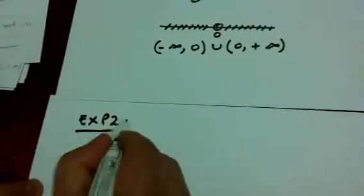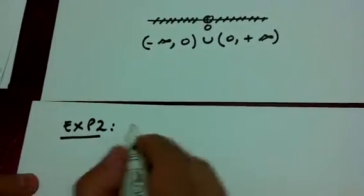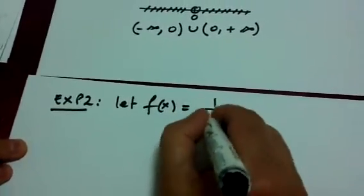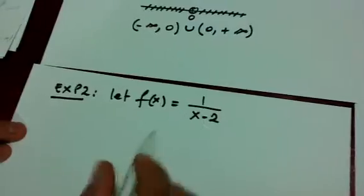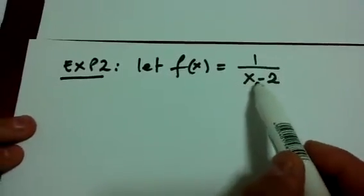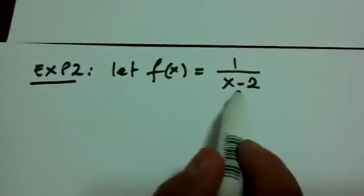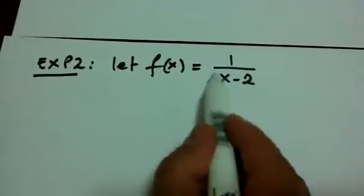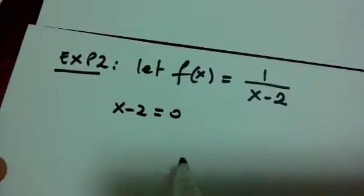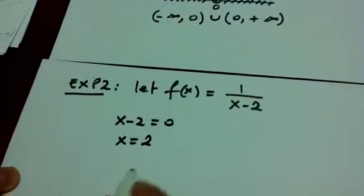Example 2: let f(x) equal one over x minus two. This is a rational function with numerator one and denominator x minus two. Since division by zero is not allowed, we find the values of x that make the denominator equal to zero by solving the equation, and we find x equals two.